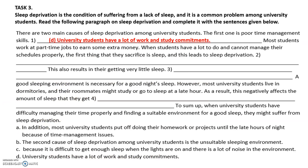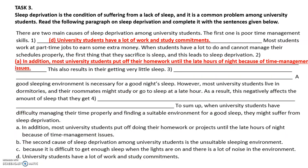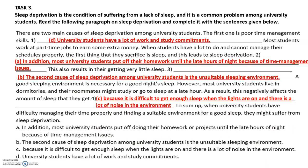For the second blank, we need something related to workload and getting very little sleep — therefore A is the correct answer, as another minor idea supporting poor time management skills. For number three, we need to give the second major idea, which is sentence B, given as the second cause of sleep deprivation. For number four, we use sentence C to give the reason for why something negatively affects the amount of sleep in the previous sentence.